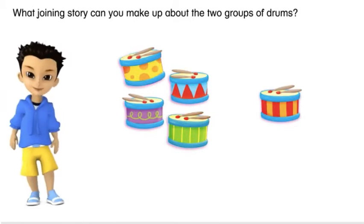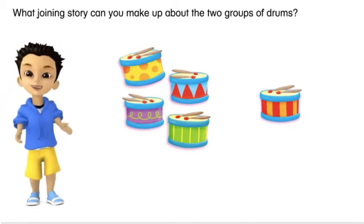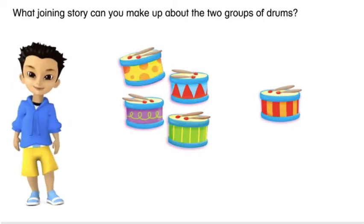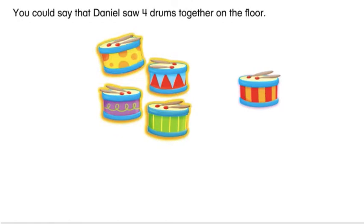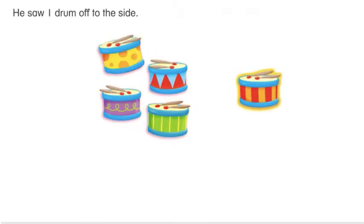What joining story can you make up about the two groups of drums? I like to play the drums. You could say that Daniel saw four drums together on the floor. He saw one drum off to the side.